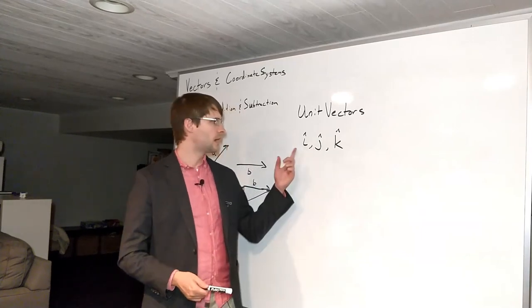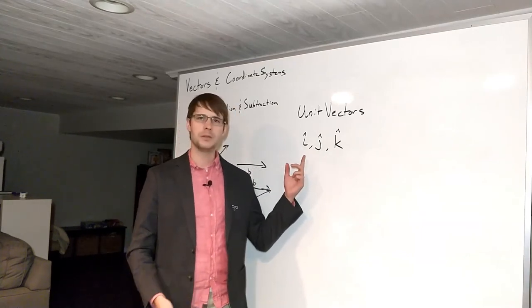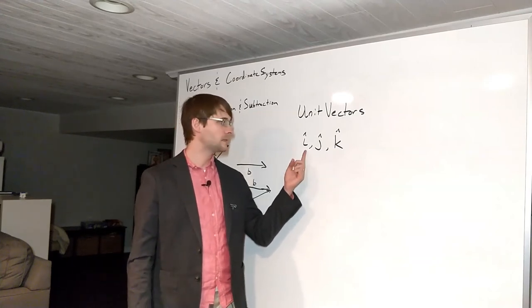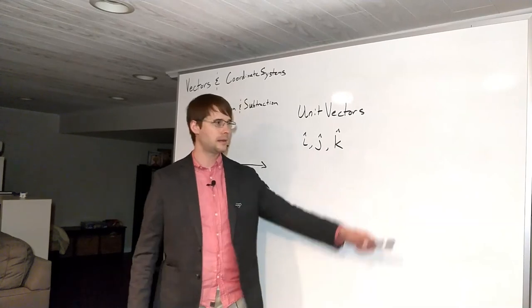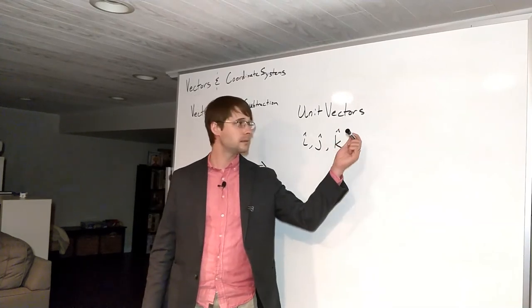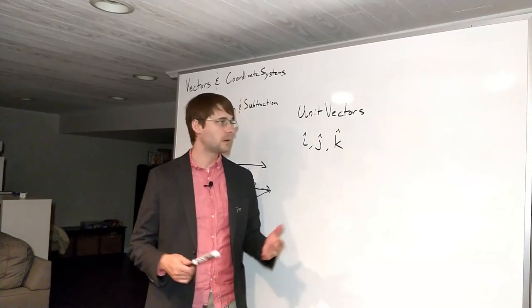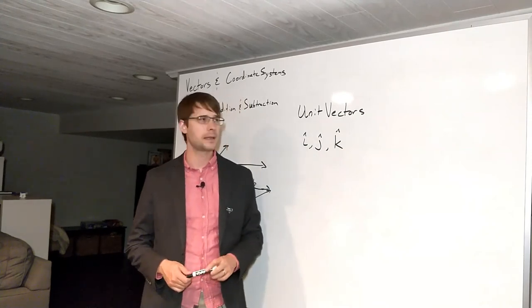So we've got I, J, and K. These correspond to our three spatial dimensions that we use most of the time. X, Y, and Z. So we've got I, J, and K would be coming at you out the board. Those are our sort of typical notations in that case.